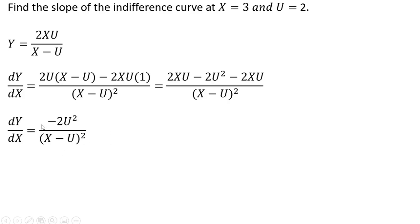Now we're just going to evaluate the slope equation here at X equals 3 and U equals 2. And doing that, the slope of the indifference curve will be minus 8. Okay, that's it. I hope you found this video helpful.